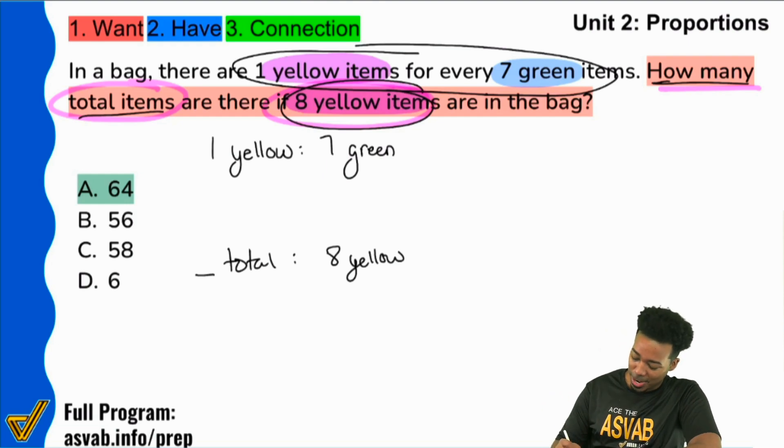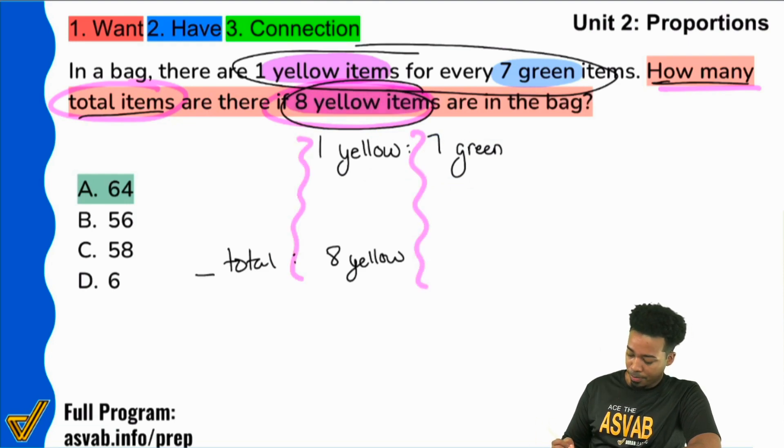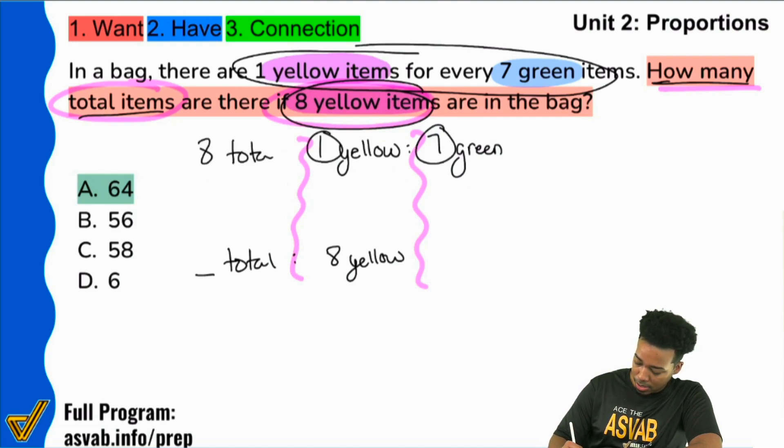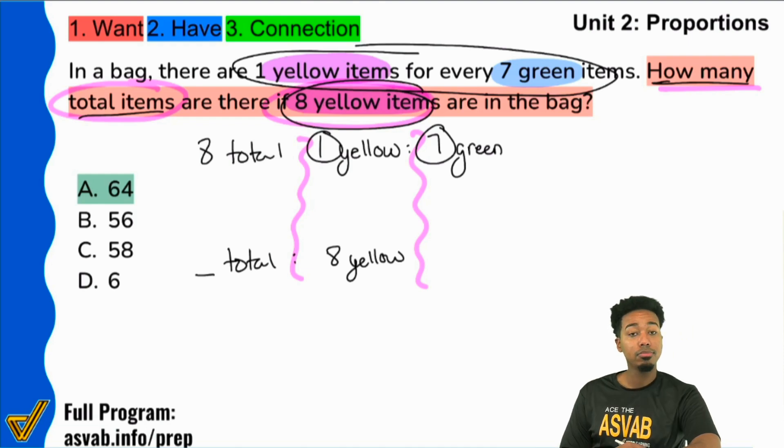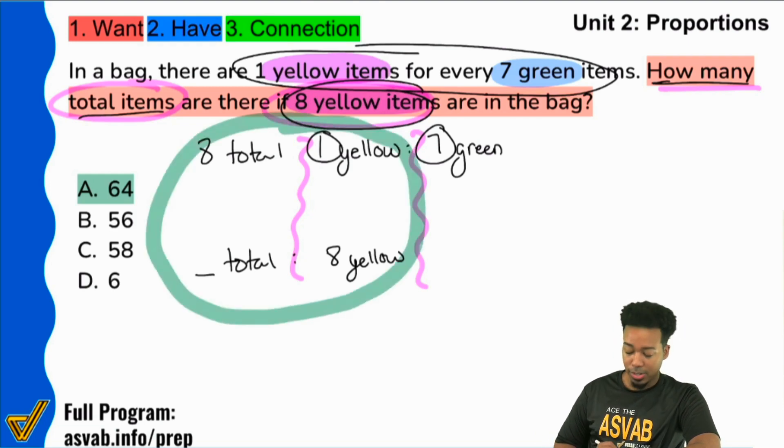So here we go. I'm going to take this right over here, move it over, so that way I can line up my yellows. And then I'm going to line up my total. If I have seven green and one yellow, that's going to be eight total. Boom. It's really that straightforward. Do I need the green down here? No, absolutely don't need it. I just need to compare the same things in the same way. I got these two proportions or these two ratios. I'm good to go now.